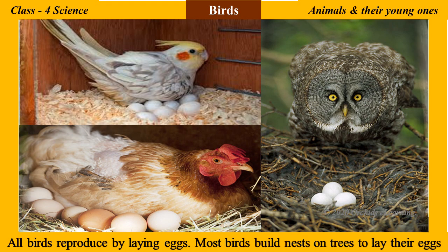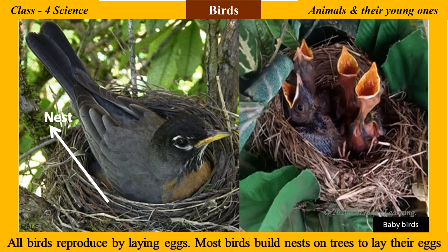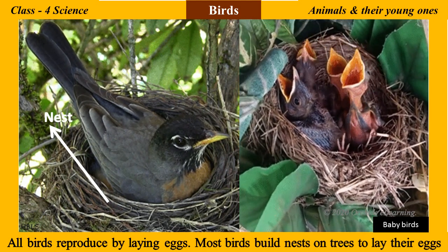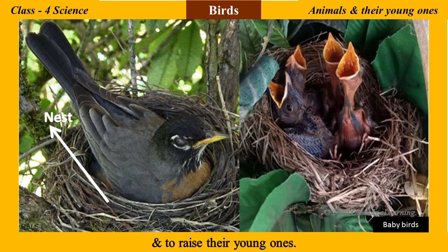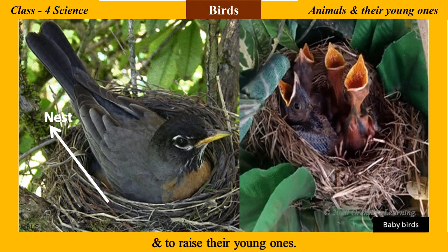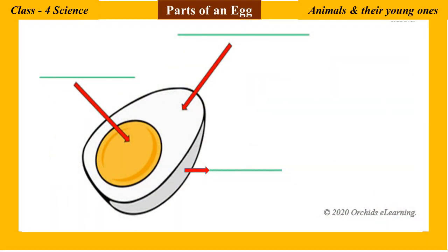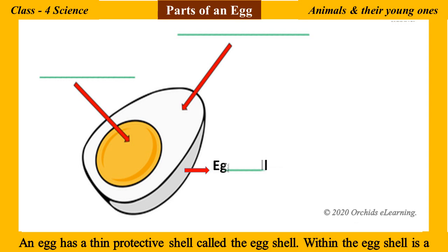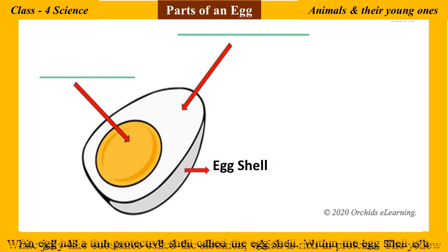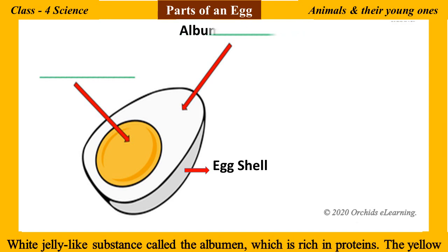Most birds build nests on trees to lay their eggs and to raise their young ones. Parts of an egg: an egg has a thin protective shell called the eggshell. Within the eggshell is a white jelly-like substance called the albumin, which is rich in proteins.